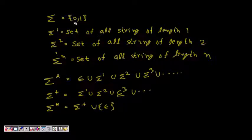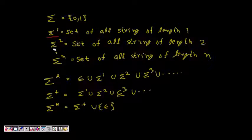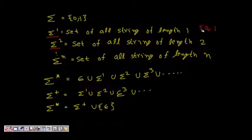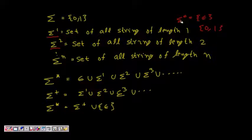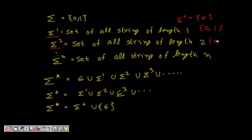Let's say sigma is {0, 1}. Sigma^1 is the set of all strings of length one: {0, 1}. Sigma^0 is {epsilon}, since epsilon is a string of length zero. Sigma^2 is the set of all strings of length two: {00, 01, 10, 11}. Sigma^3 can be similarly formed.